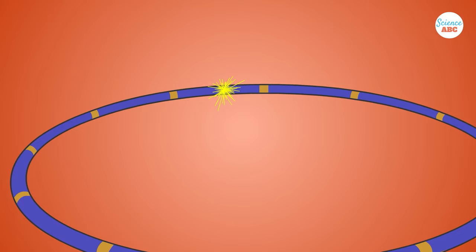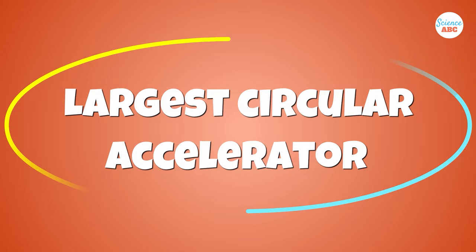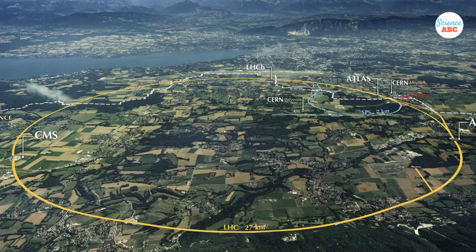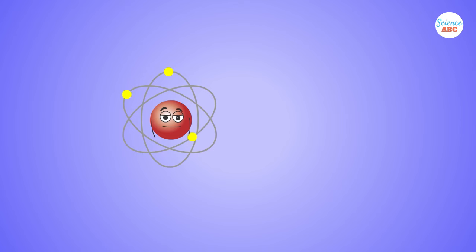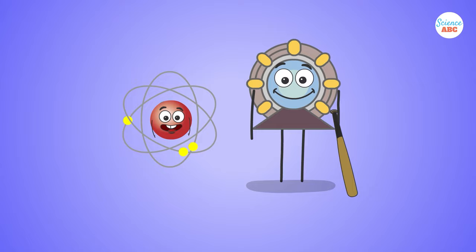The largest circular accelerator in the world is called the Large Hadron Collider, or LHC, which is located at CERN near the French-Swiss border. The circumference of the accelerator is nearly 17 miles or 27 kilometers, greater than the length of Manhattan. Circular particle accelerators are sometimes also referred to as atom smashers, as they smash subatomic particles into each other.